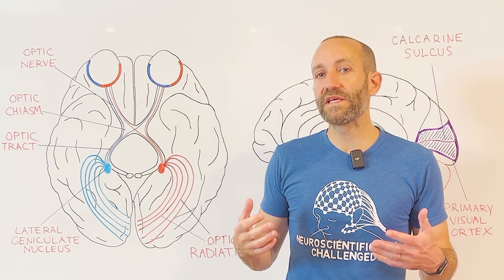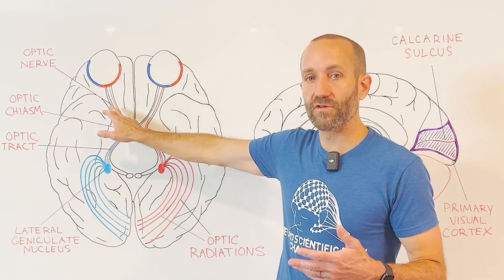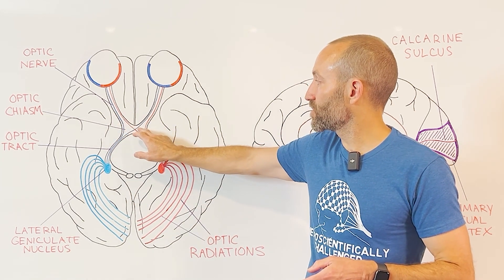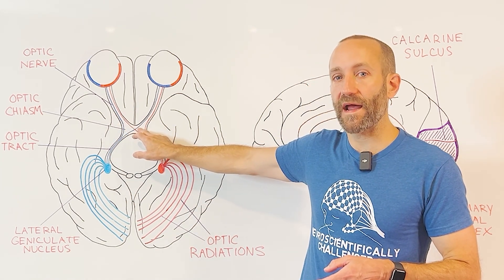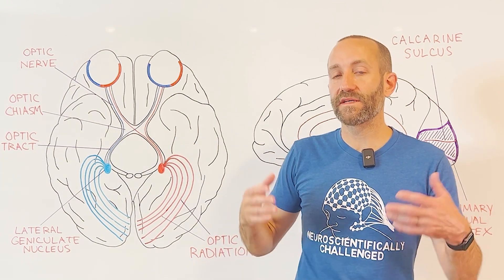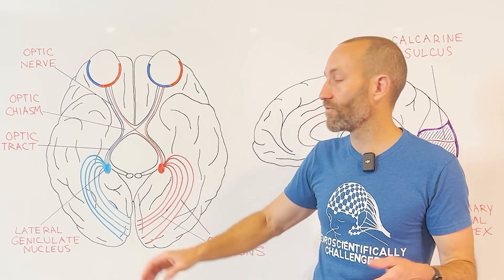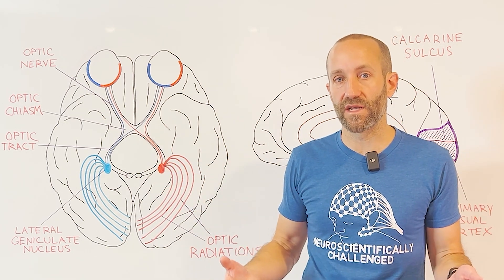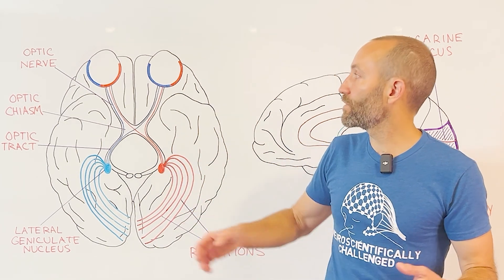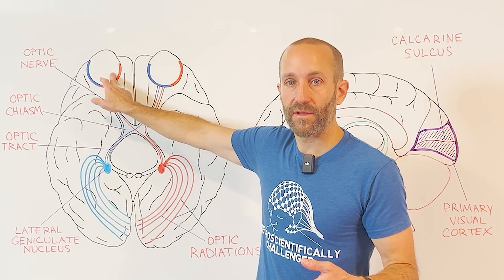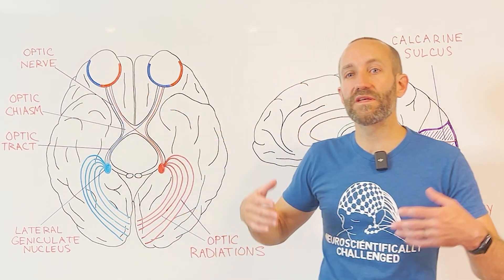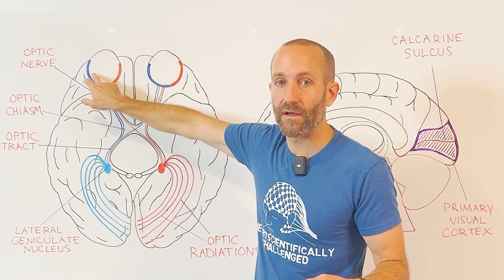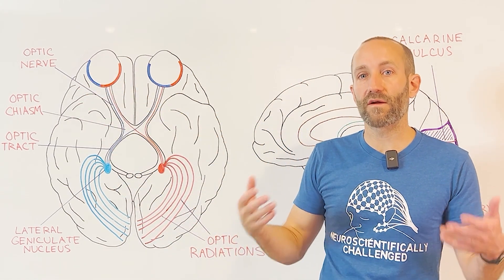The ganglion cells leaving the eye form the optic nerve, one of our cranial nerves. The optic nerve extends back to a region just below the hypothalamus called the optic chiasm. At the optic chiasm, about 60% of the axons from the optic nerve cross over to the other side of the brain, while the rest stay on the side they originated on. The fibers coming from the nasal part of the retina cross over, or decussate, while the fibers from the temporal part of the retina do not.